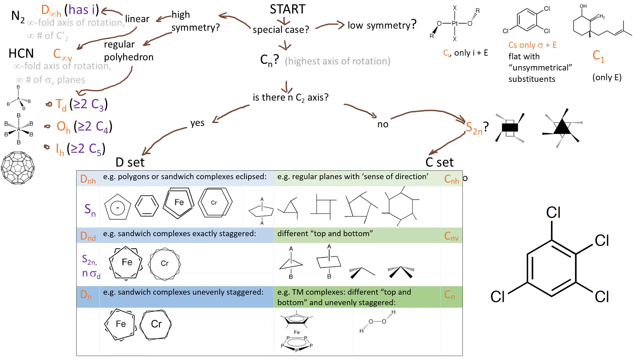Now let's do some examples. Is this molecule a special case? No. What's the principal axis? C2. Are there two C2 axes perpendicular to that axis? No. Does it have S4? No. Does it have sigma H? That is sigma perpendicular to the main axis? No. Does it have sigma V? Yes, 2 actually. So the molecule symmetry is C2V.